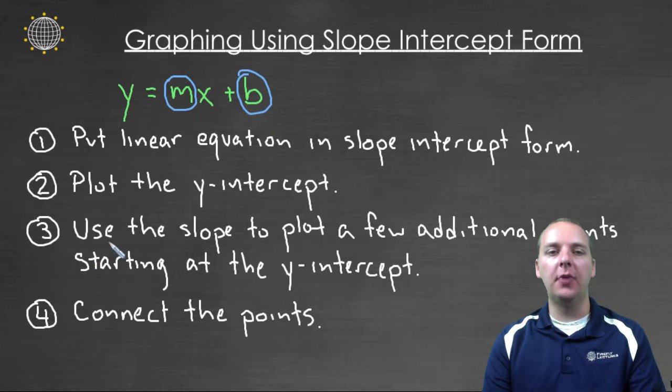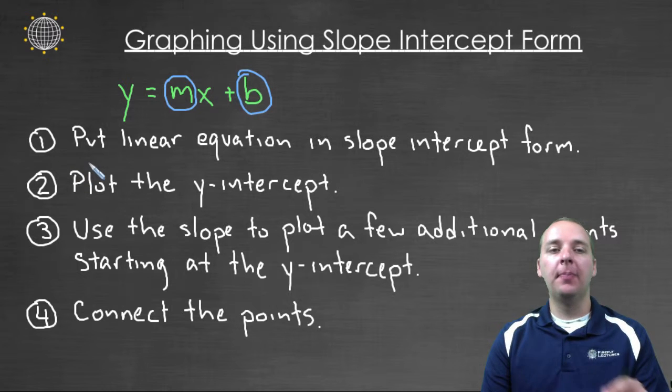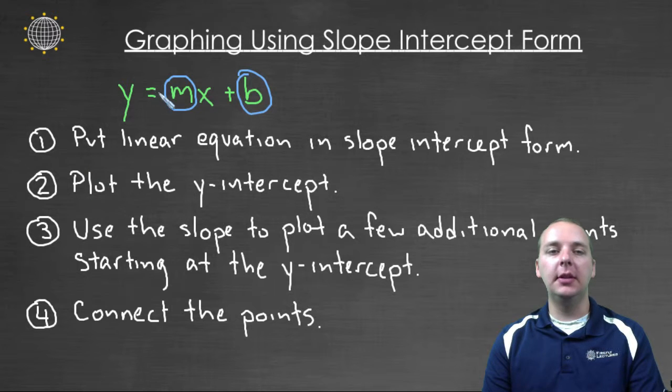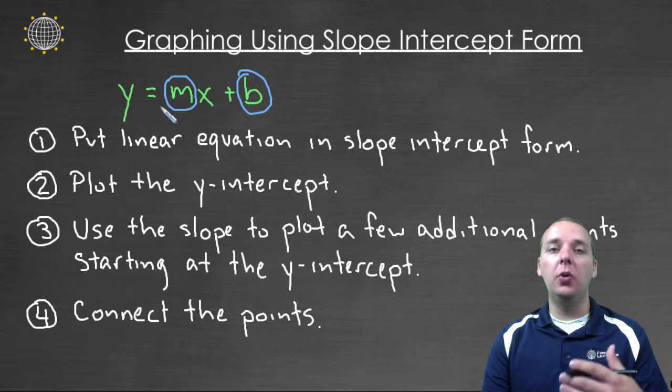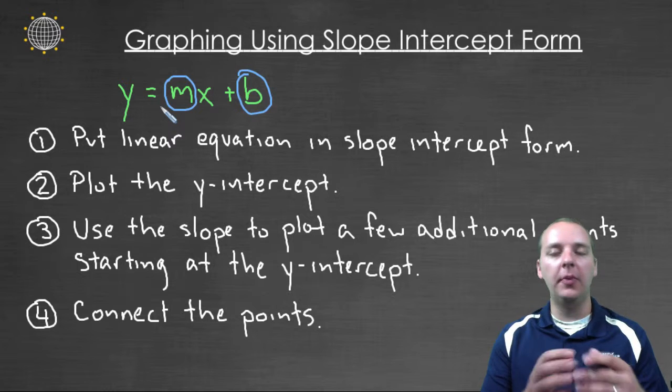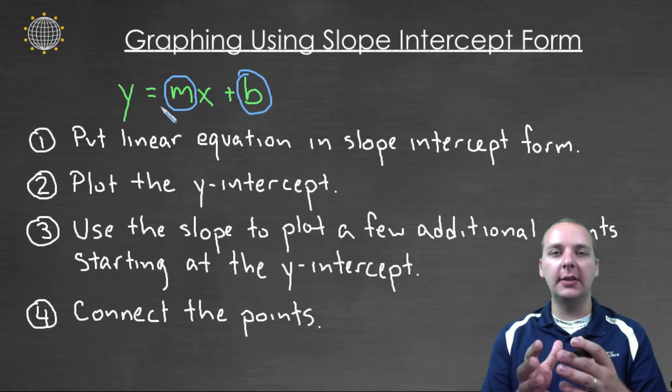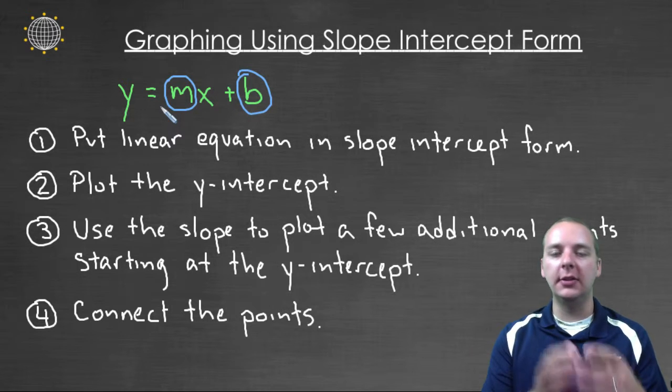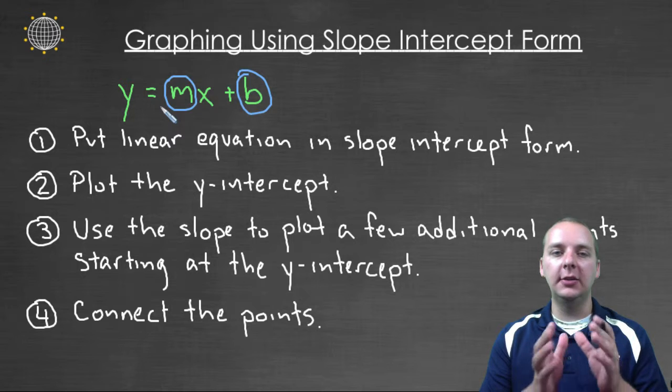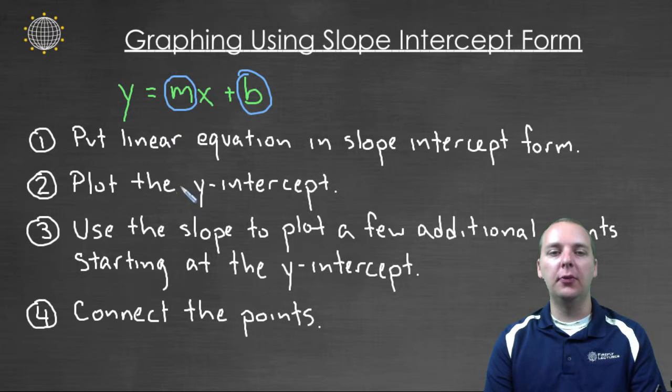So here's some steps that we're going to follow. Step number one is put your linear equation in slope intercept form if it's not already. A lot of times the equation will already be in slope intercept form, so you can skip this step, but a lot of times it will not be in slope intercept form and you'll have to subtract some x's or divide by some constants or do various things to put it in this particular form.